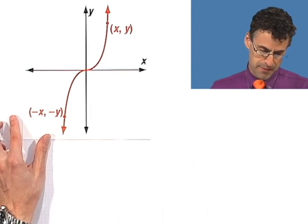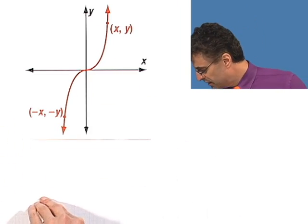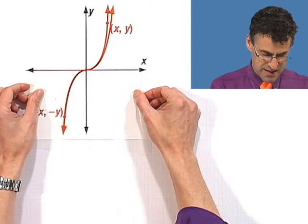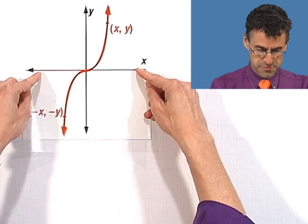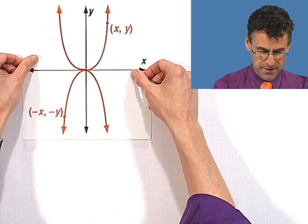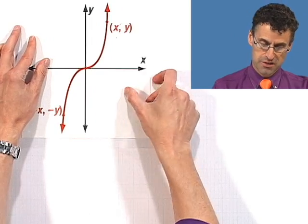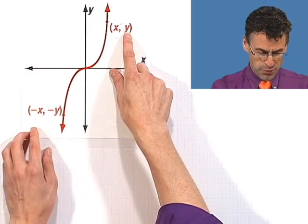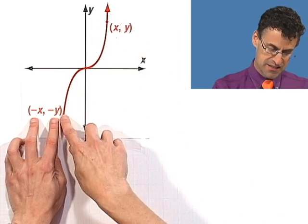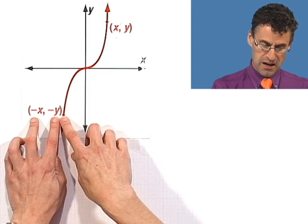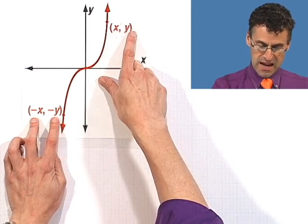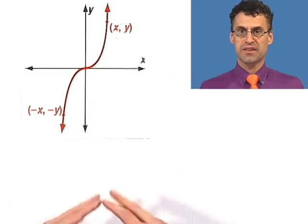And then if you have something like this, it has a funny symmetry which I can't really show you with a mirror, but I can show you with one of these things. If I first reflect with respect to the x-axis — boom — and now reflect with respect to the y-axis, it matches up perfectly. So if I take a point x comma y and make both of them negative, that point is still going to be on the graph. That is to say, if I flip both x and y and make them negative, I'm still on this graph.